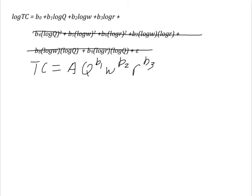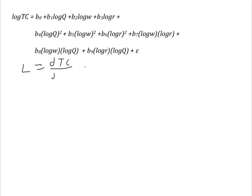The point is, the translog is a very flexible functional form that allows us to approximate virtually any cost function. By now, we know that L is equal to the partial derivative of TC with respect to W.